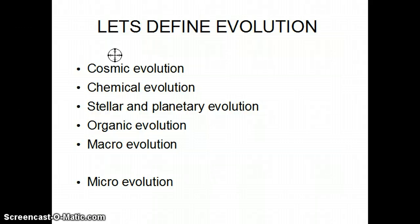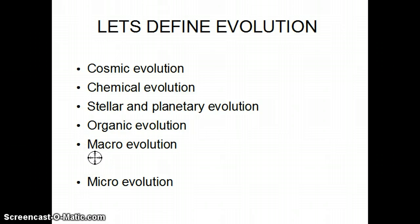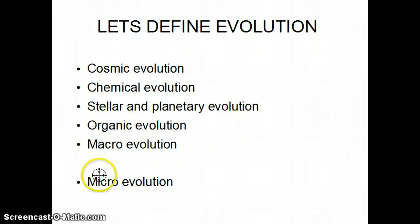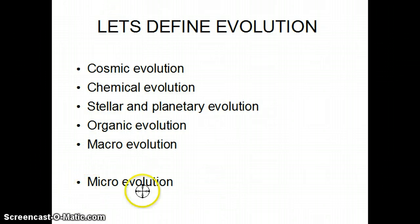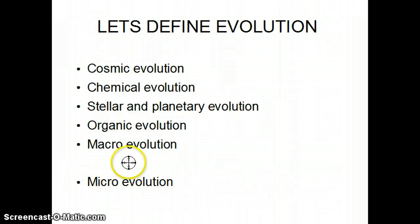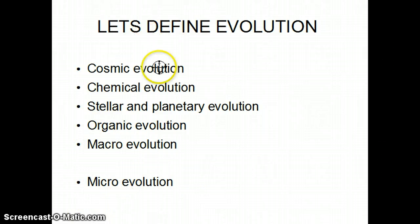Organic evolution: how do you get life from non-life? Macro evolution is the one most people think of — how that single-celled organism evolves into all the life we see on earth today. And lastly, micro evolution, more accurately described as change within kinds. This is the only one we actually observe. Big dogs, small dogs — they're all still dogs. Big horses, small horses — still a horse. So now that we understand what evolution is, let's understand what circular reasoning is.